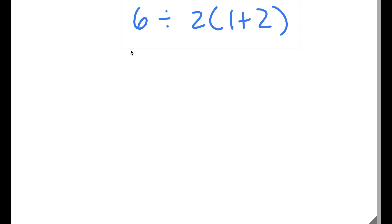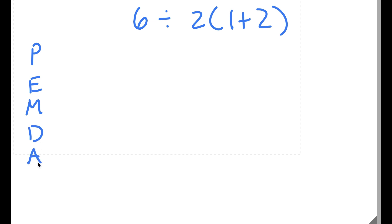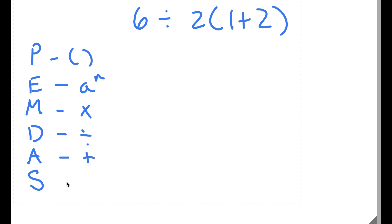So in this problem, I have 6 divided by 2 times (1 plus 2). This is actually a very simple algebraic problem that many people get wrong. To solve this, I'm going to use PEMDAS: P for parentheses, E for exponents, M for multiplication, D for division, A for addition, and S for subtraction. We start at the top and look for parentheses first. As you can see, 1 plus 2 is in parentheses, so we solve that first — 1 plus 2 equals 3.